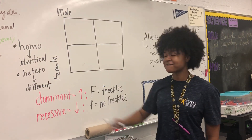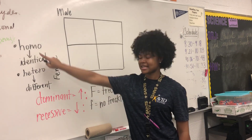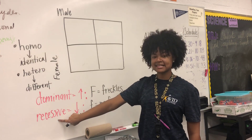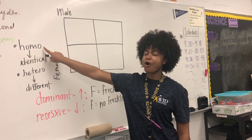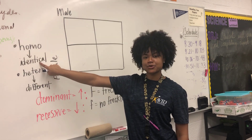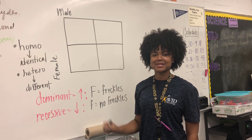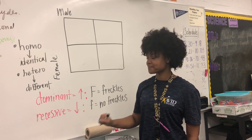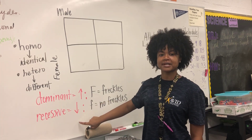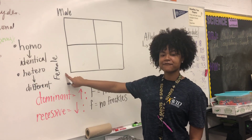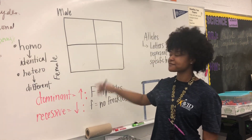So if the female's alleles are homozygous recessive, and homo means identical, that means that the alleles have to be the same. If they are both recessive, that means they are both lowercase, which means for the female, we are going to put two lowercase f's.